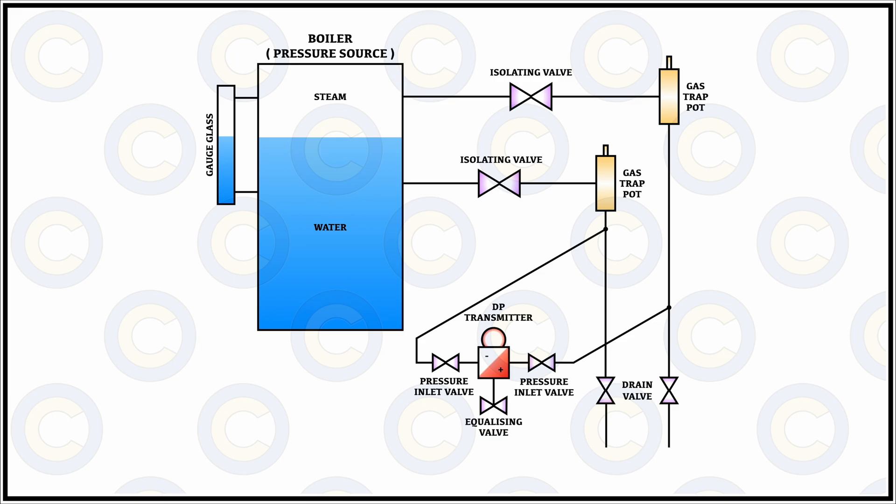Once everything is settled with respect to the amount of time that needs to be allowed, then we can simply switch on the panel which we had isolated before we were calibrating or replacing the DP transmitter and then check for the level of the boiler and also the indication on the remote side.